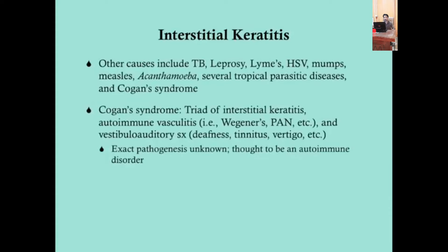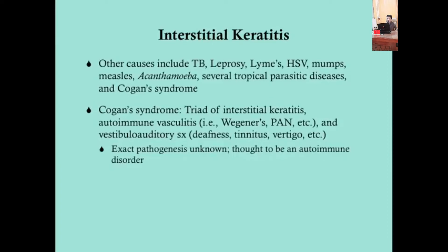Other causes of interstitial keratitis — less common than syphilis in the U.S. — include TB, leprosy, Lyme disease, herpes simplex virus, mumps, measles, acanthamoeba, and tropical parasitic diseases such as onchocerciasis, leishmaniasis, and trypanosomiasis. Cogan syndrome is a unique autoimmune cause featuring a triad of interstitial keratitis, autoimmune vasculitis (like Wegener's or PAN), and vestibulo-auditory symptoms including deafness and vertigo.